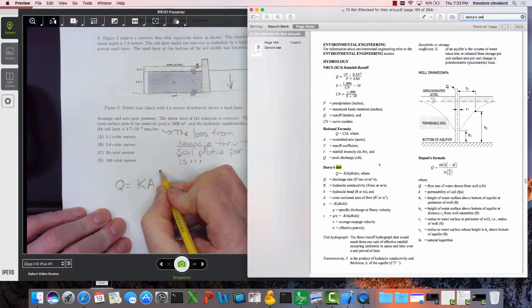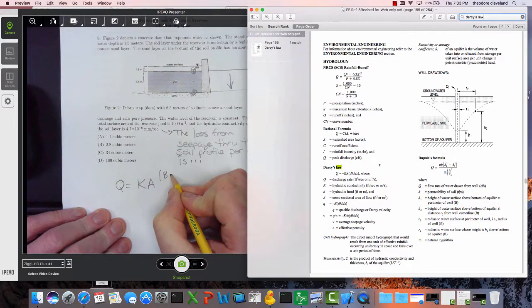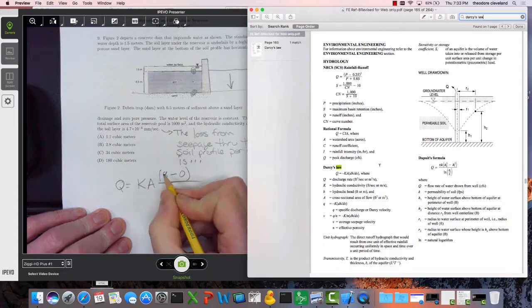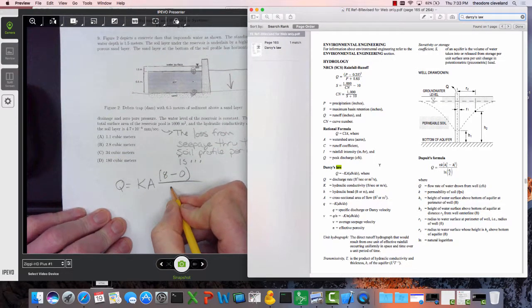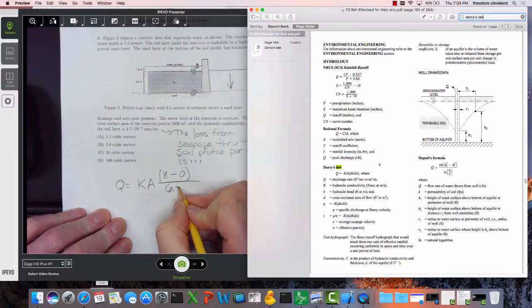And now how thick is the filter layer? 6.5 meters. What's the value for area?